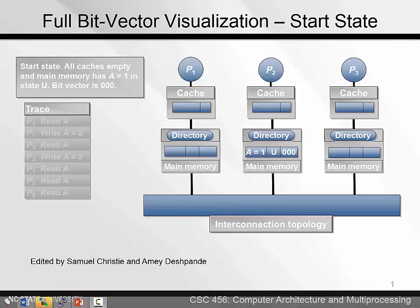Now let's see how the directory-based full bitvector protocol operates. We won't go through the cache state transition diagram because it's the same as MESI. We will be looking at what happens to one block as it is read and written by the three processors. Note the directory entry for the block. Because there are three processors in this example, there are three bits in the bitvector.